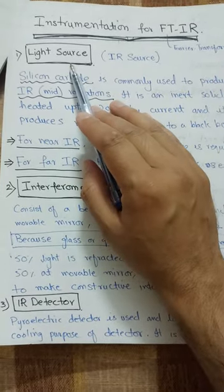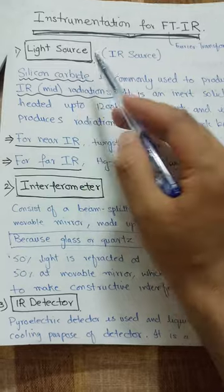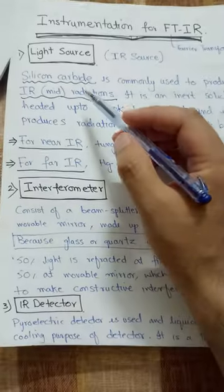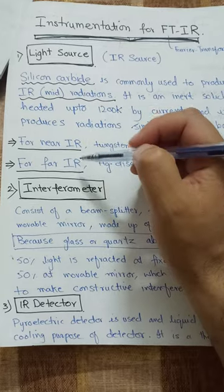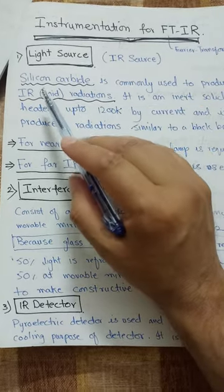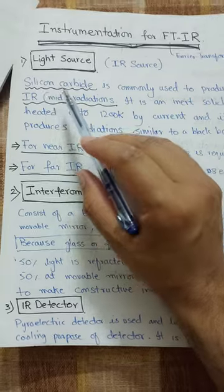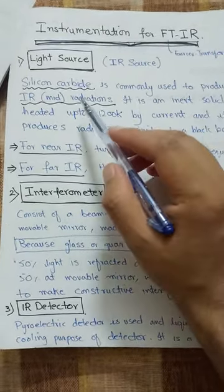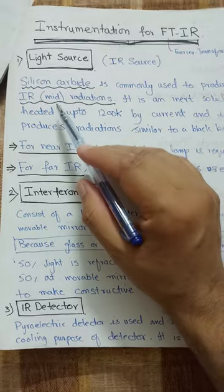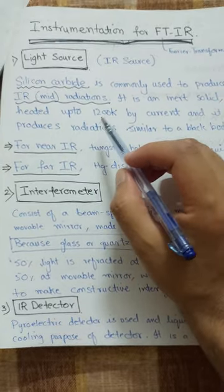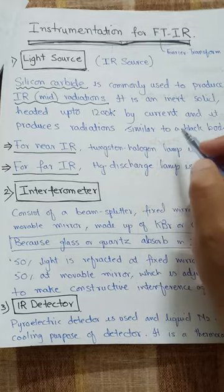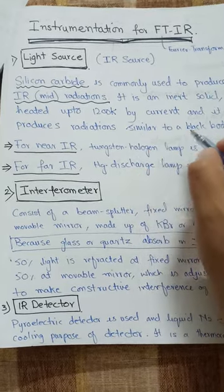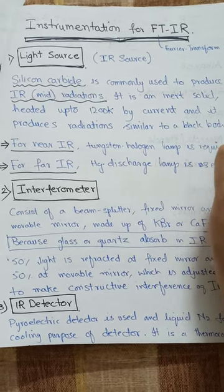First of all we will discuss the light source of the IR spectrophotometer. There are three types of light sources which produce three different types of radiations. For mid-infrared radiation we use silicon carbide, which is an inert solid. It is heated up to 1200 K by current and emits radiation similar to black body radiations.